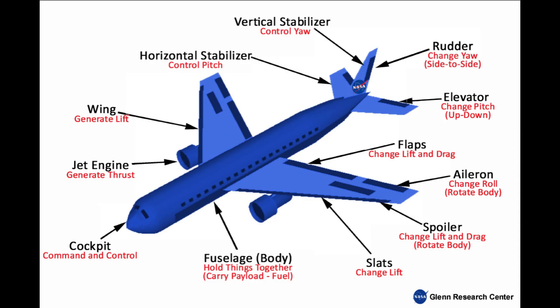Empennage — the tail section. This includes the horizontal stabilizer, which keeps the plane level front to back and controls pitch; the vertical stabilizer, which keeps the plane steady side to side and controls yaw; and the elevators and rudder, which are moveable parts that help steer the plane.